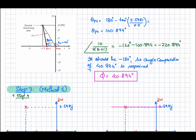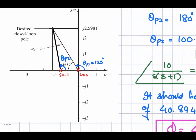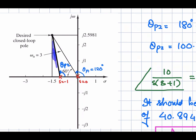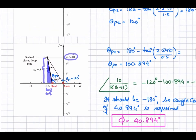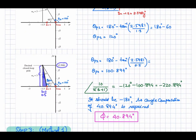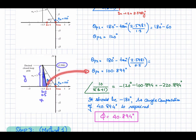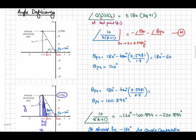For the second open-loop pole at s = −1, the triangle has a base of 0.5 and height of 2.5981. Using the tangent inverse of y/x, the angle from the pole at −1 to the desired closed-loop pole comes out to 100.894°.